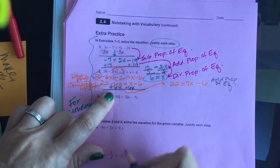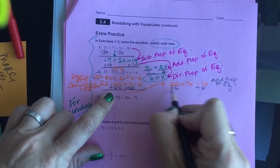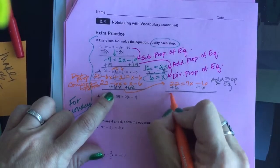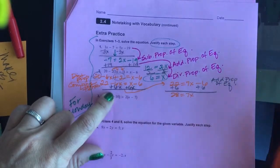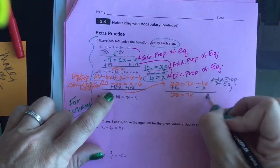Addition property of equality there. My next step is going to be add 6 to both sides. So 28 equals 7x. That's my addition property again.